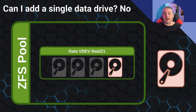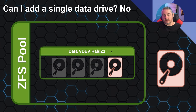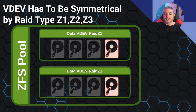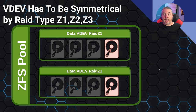Can you add a single drive? No. That's the first problem and answer, but there's more to the story because there are ways to expand the pool. You have four drives making up a VDEV in RAID Z1, and expansion comes down to this: VDEVs have to be symmetrical by RAID type. If you started with RAID Z1, each subsequent VDEV you add has to be Z1. If it were Z2, it'd have to be Z2.